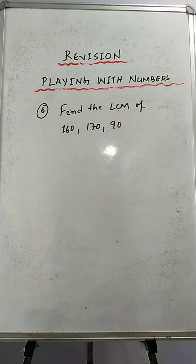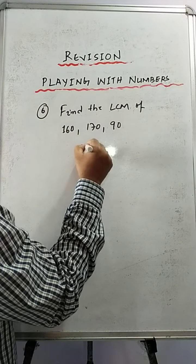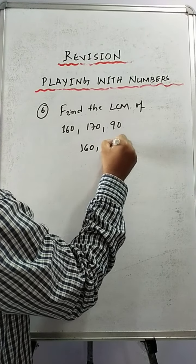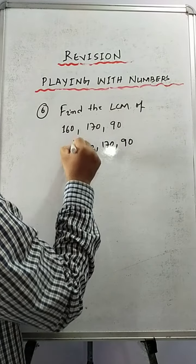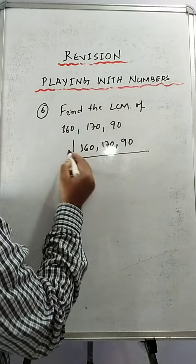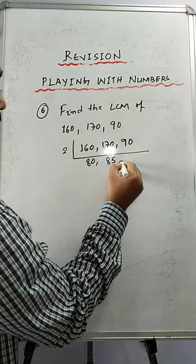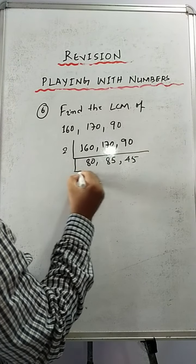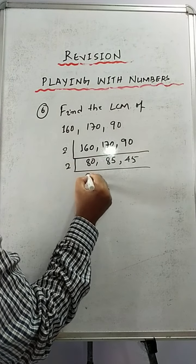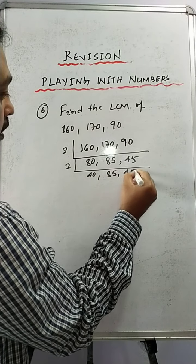Now we have to find the LCM of 160, 170, and 90. All these numbers are divisible by 2 because the unit digit is 0. So dividing by 2: we get 80, 85, 45. This number 80 is divisible by 2: giving 40, 85, 45. These last two are not divisible by 2. Again 40 is divisible by 2: giving 20, 85, 45.